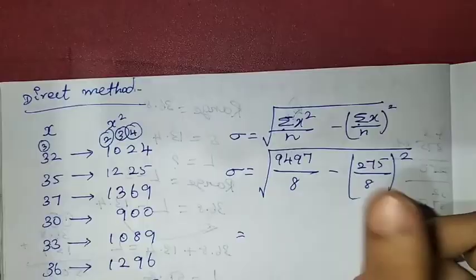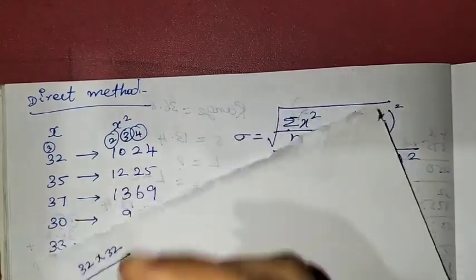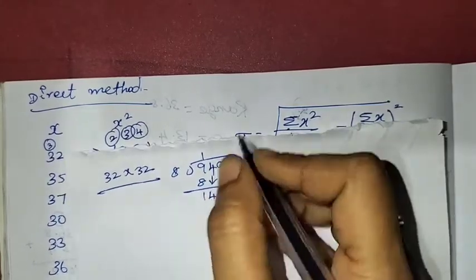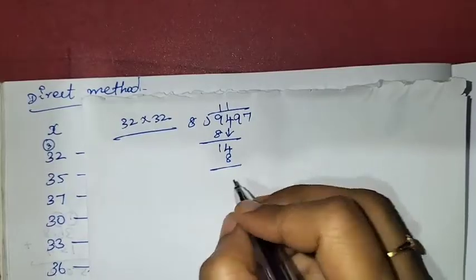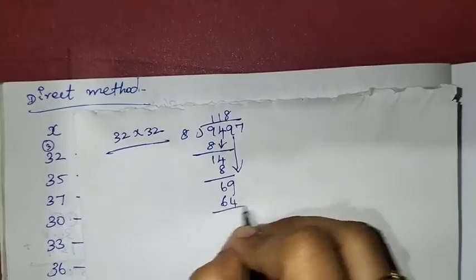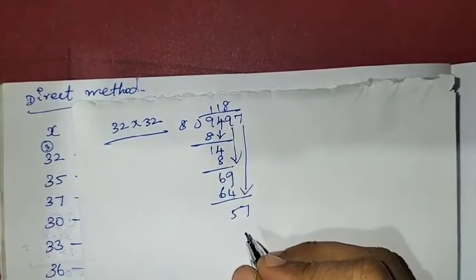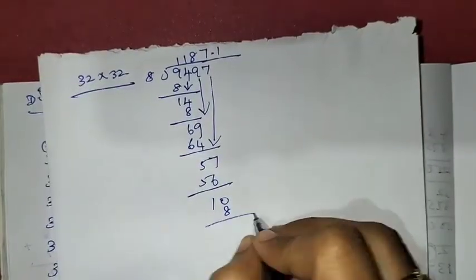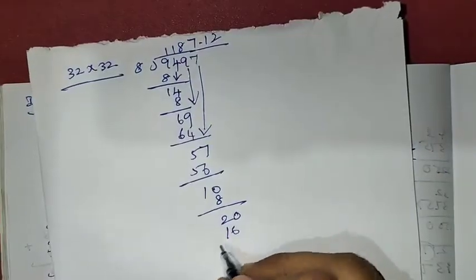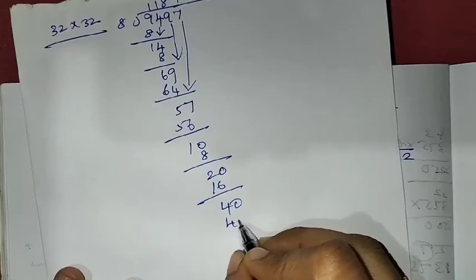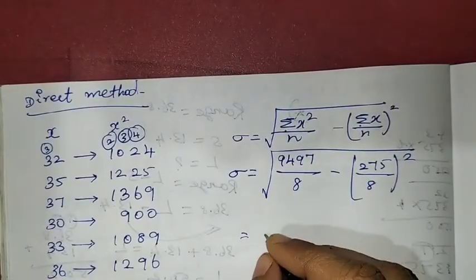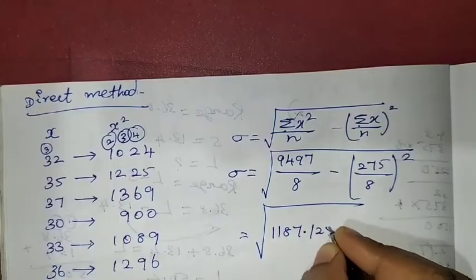Now dividing 9,497 by 8 gives 1,187.125. Then dividing 275 by 8: 8 threes are 24, balance 3; 8 fours are 32, balance 3; decimal — 8 threes are 24, balance 6; 8 sevens are 56, balance 4; 8 fives are 40. So 275 divided by 8 equals 34.375.